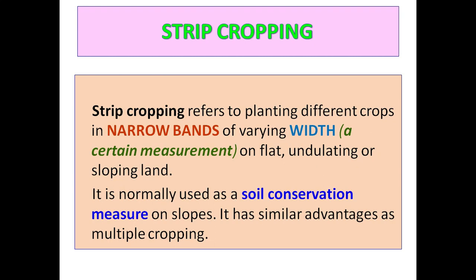Strip cropping is a form of multiple cropping and can also be a form of contour cropping when done on a hill. Strip cropping refers to planting different crops in narrow bands of varying width on flat, undulating, or sloping lands. It is normally used as a soil conservation measure on slopes and has similar advantages to multiple cropping.